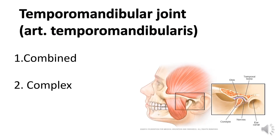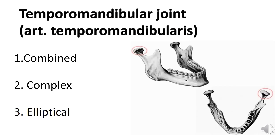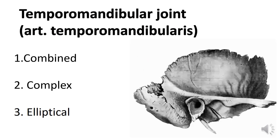The joint is complex, since it contains a joint disc in the joint cavity. The joint is ellipsoidal, as it is formed by the articular head of the lower jaw, caput mandibulae, the mandibular fossa of the temporal bone, fossa mandibularis, as well as the articular tubercle of the temporal bone, tuberculum articulare, which are covered with fibrous cartilage.